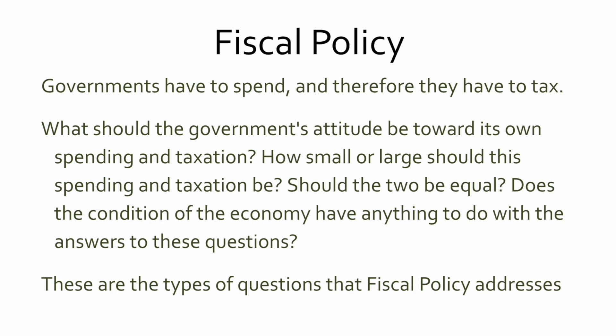Different political stripes will have different priorities, and when we have elections you will see priorities change. Every single government, no matter what political stripe, will create a budget that lays out their spending objectives and spells out how they're going to get revenue — whether from taxpayers or borrowing. So what should a government's attitude be towards its own spending and taxation? It really depends on the political stripe. How small or large should government spending be? How large or small should taxation be? Should revenues and expenditures meet one another, or is there borrowing in place?